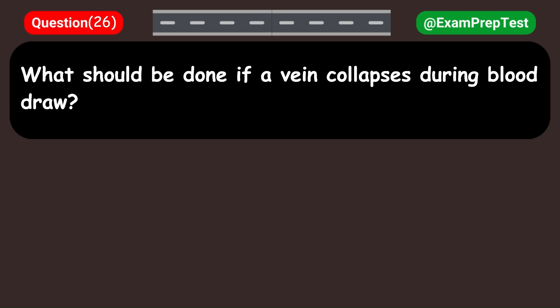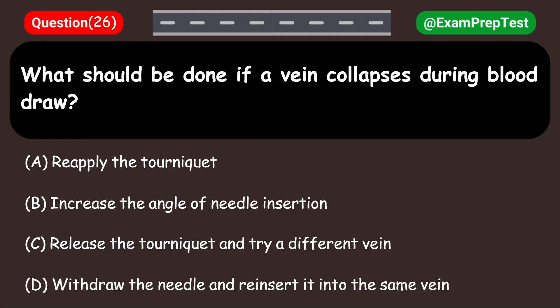What should be done if a vein collapses during a blood draw? A. Reapply the tourniquet. B. Increase the angle of needle insertion. C. Release the tourniquet and try a different vein. D. Withdraw the needle and reinsert it into the same vein. Answer: C. Release the tourniquet and try a different vein.